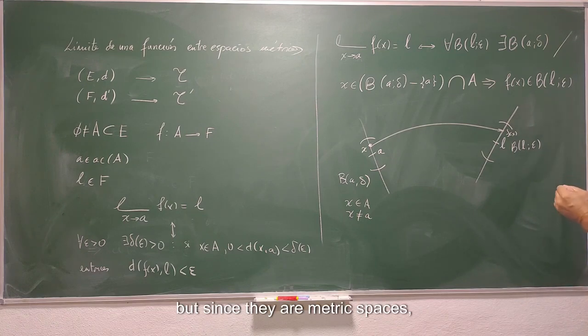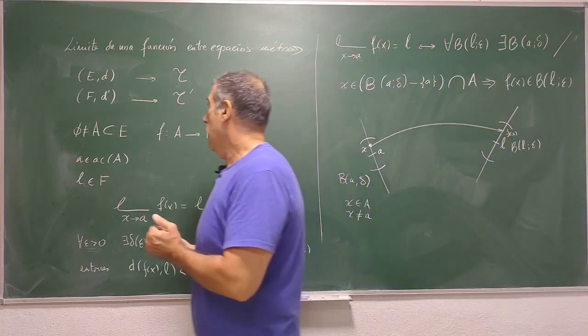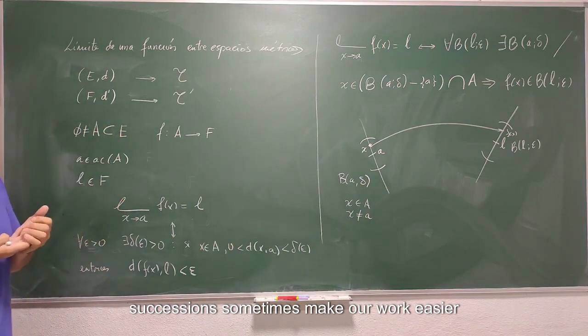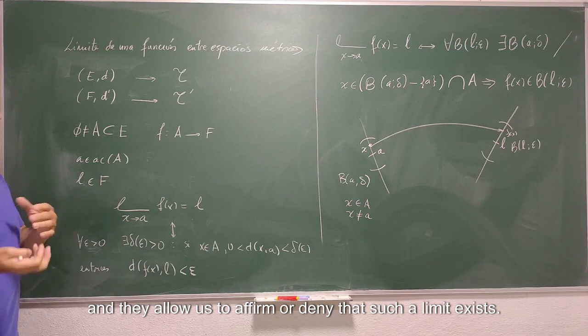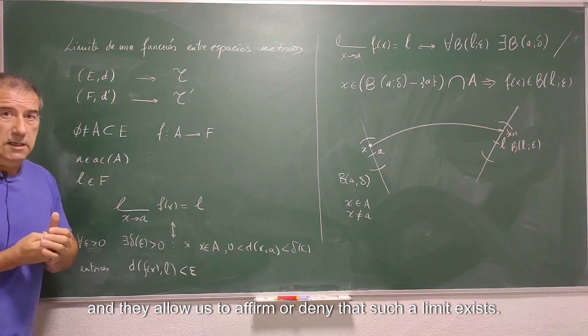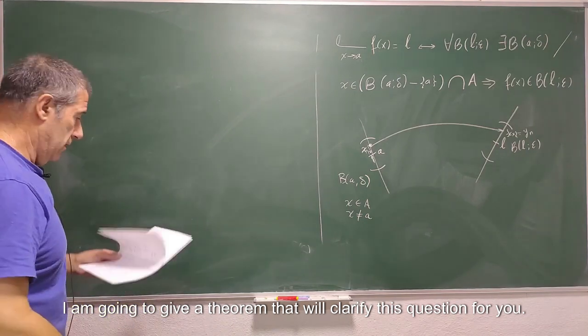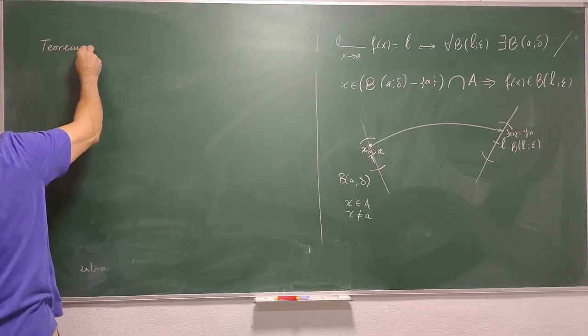But since they are metric spaces, successions sometimes make our work easier and they allow us to affirm or deny that such a limit exists. I am going to give a theorem that will clarify this question for you. It's the next one.